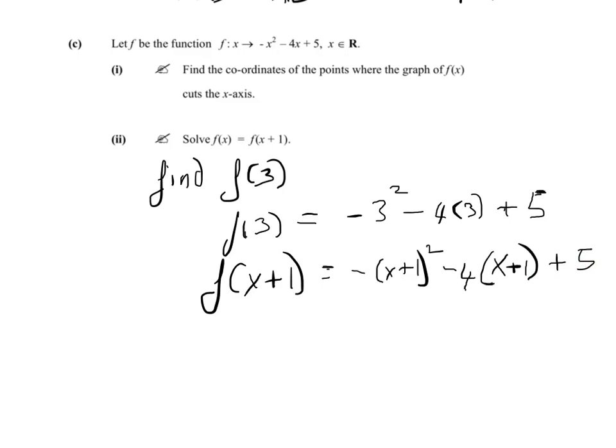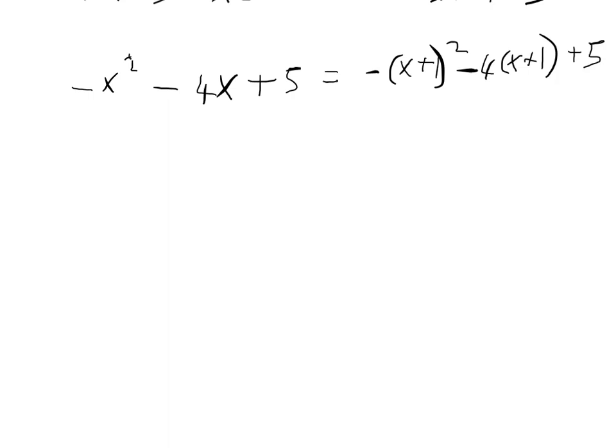So we know that f(x+1) equals minus (x+1) squared minus 4(x+1) plus 5. We can substitute this in for f(x+1) on the right-hand side of the equation. The full equation has minus x squared minus 4x plus 5 on the left, equal to minus (x+1) squared minus 4(x+1) plus 5 on the right. That gives us a long equation, and now it's just a question of solving it.